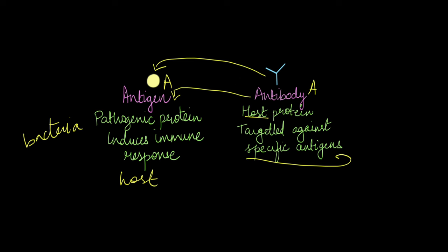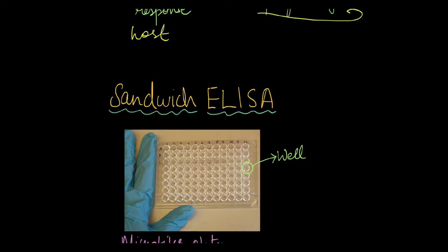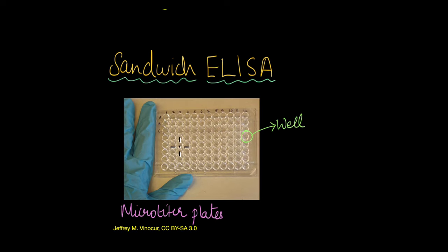So now we'll move on to what is sandwich ELISA. Sandwich ELISA and basically any other type of ELISA is performed on these microtiter plates. These are either glass or plastic plates that have small wells in them, like hollow wells inside which we will be performing the ELISA procedure.